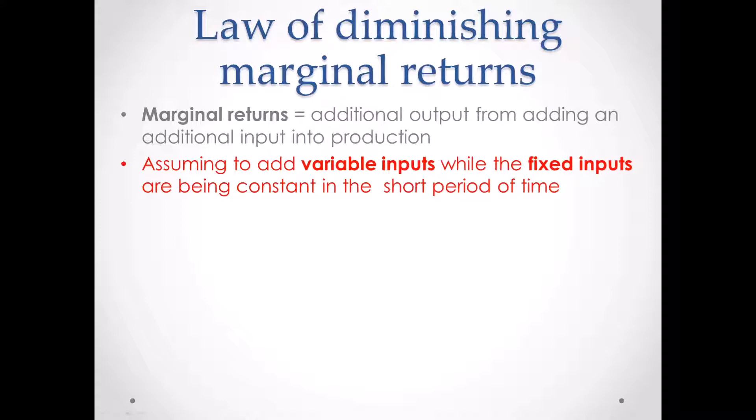When you want to have more output, obviously you need some more resources to help you produce more. So that is the case — if you want to have additional output, you need more input to help you. And at the end, you will find marginal returns, which is additional output.